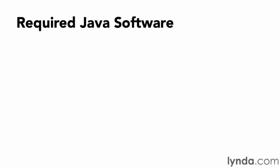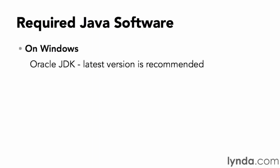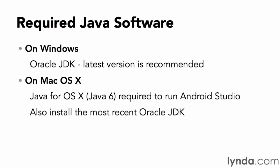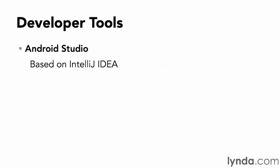You'll need to set up some software on your system to follow along with the course examples. First, you'll need Java. On Windows, install the latest version of the Java Developer Kit or JDK from Oracle — at the time of this recording that was Java 8. On Mac OS X, you'll need Java for OS X from Apple, which is based on Java 6, but you should also install the latest JDK from Oracle. You'll also need Android Studio. All of the software you need is completely free and downloadable without registering.